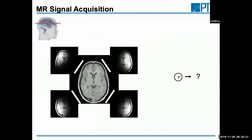For a slice through the head, each coil produces a different image showing different parts of the head depending on where the coil was. For diagnostic purposes I want a nicely homogeneous image covering everything, not six or seven images each showing just part of the brain. The question is how to combine them.